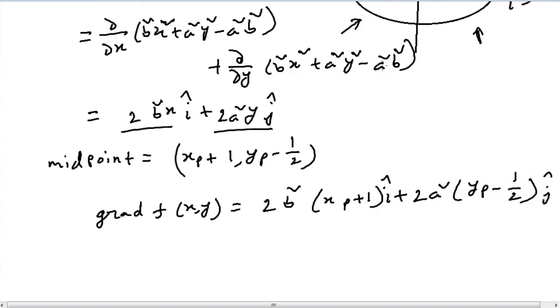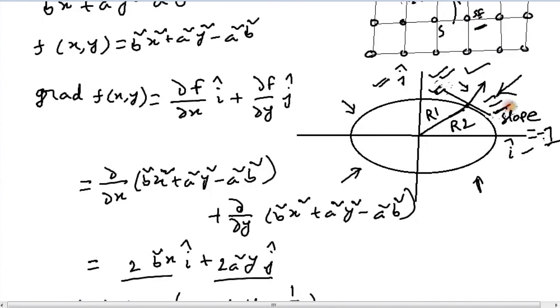So this is the part where you need to understand that when the magnitude of î becomes greater than ĵ, we've already crossed into region 2. That's what that means. Because in this part of the region, the magnitude of ĵ is always greater than the magnitude of î.